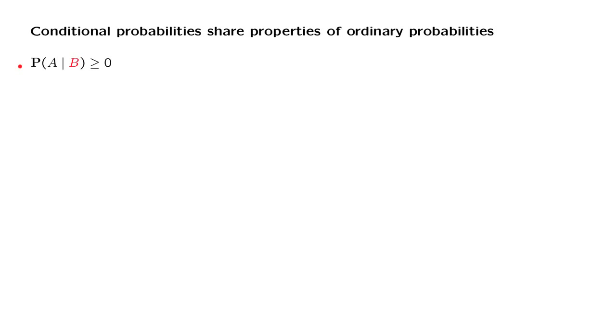For example, ordinary probabilities must be non-negative. Is this true for conditional probabilities? Of course it is true, because conditional probabilities are defined as a ratio of two probabilities. Probabilities are non-negative, so the ratio will also be non-negative, as long as it is well defined. We only talk about conditional probabilities when we condition on an event that itself has positive probability.